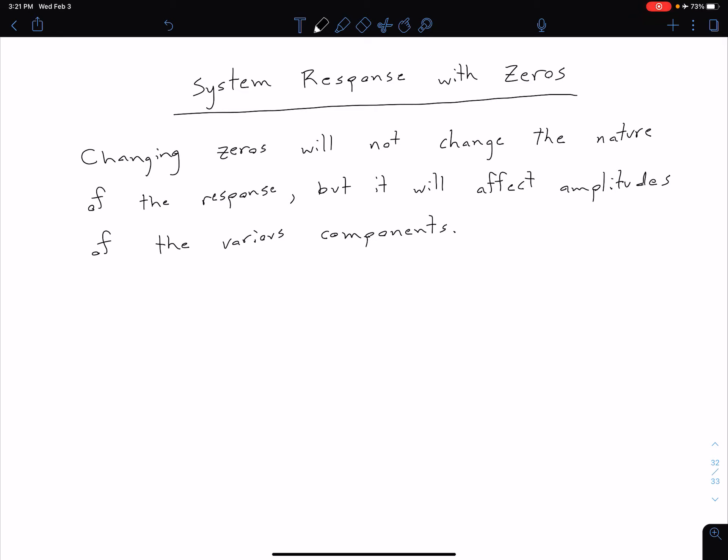However, adding these zeros is going to affect the amplitudes of the various components. So ultimately what this means is we could see changes in things such as percent overshoot.